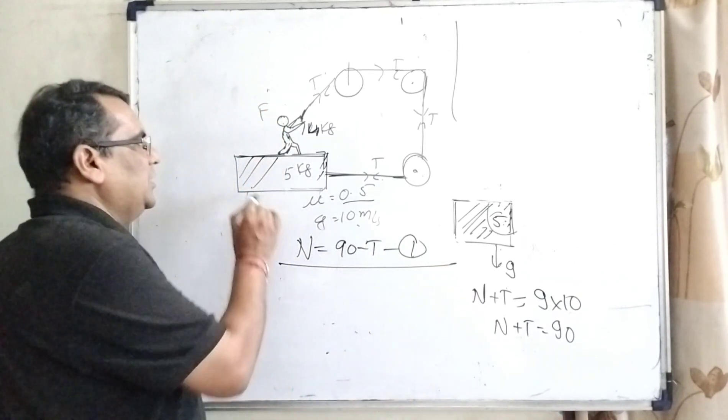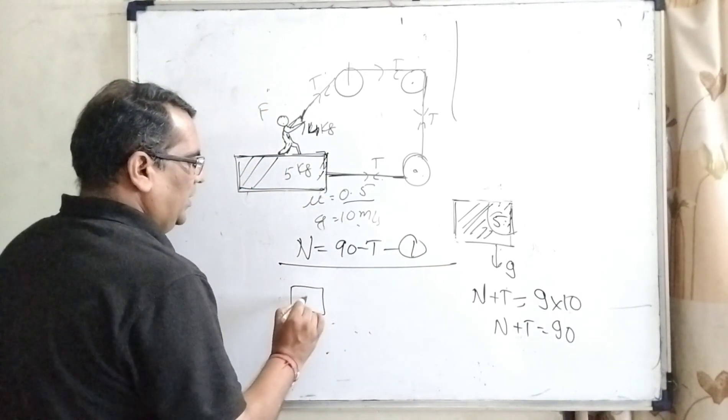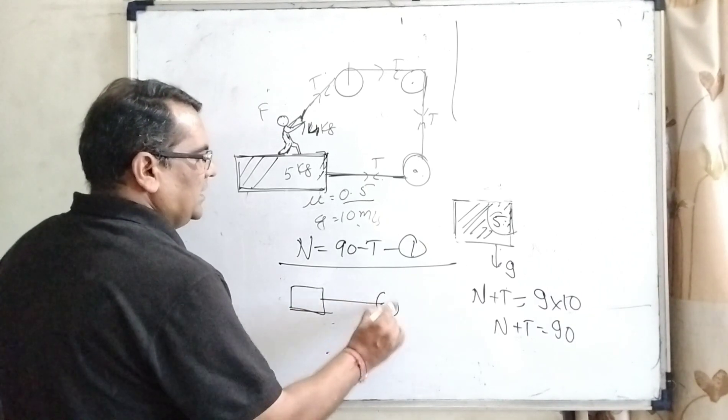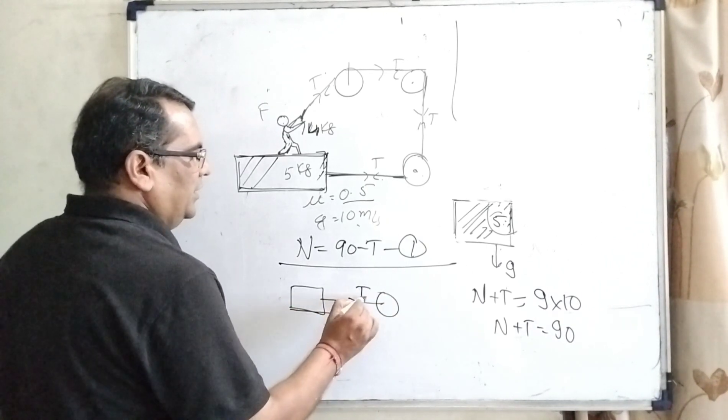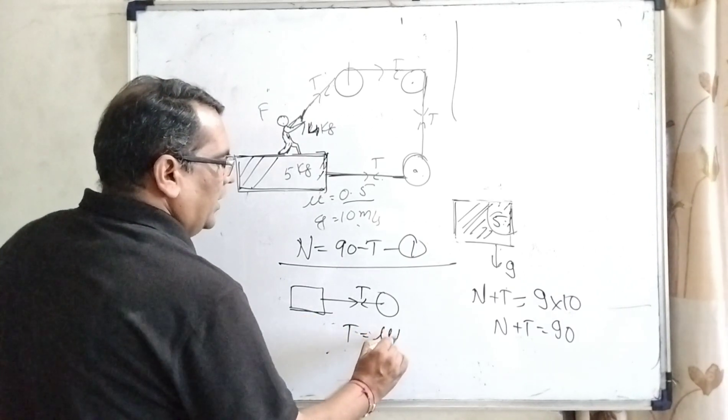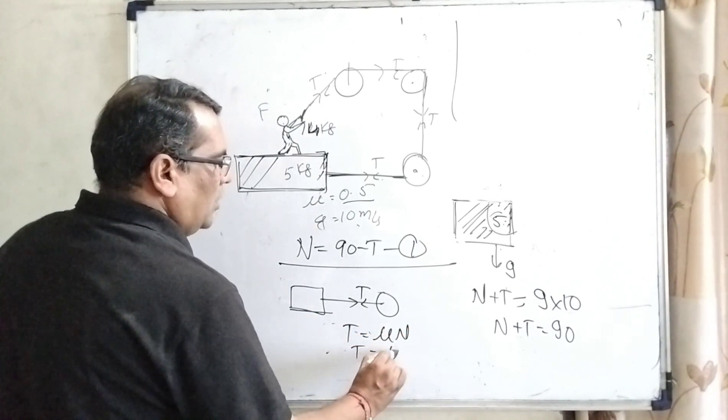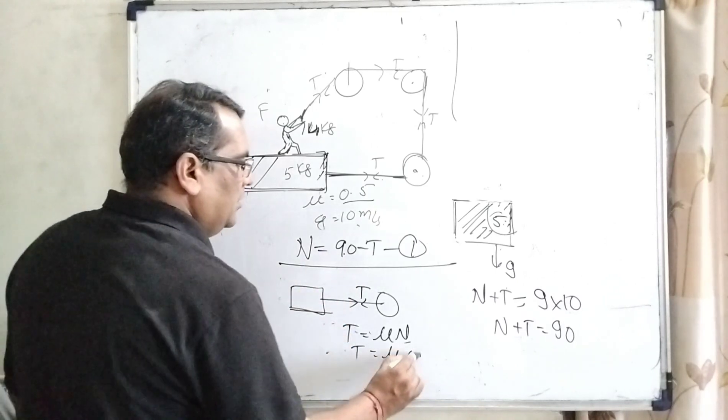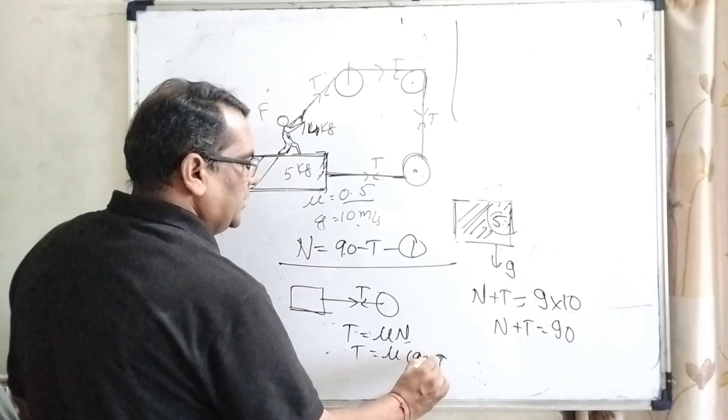For the second condition, when this block is moving towards the right side, means tension is applied here. So tension force equal to mu and normal force. And what is normal force? Normal force is 90 minus T.